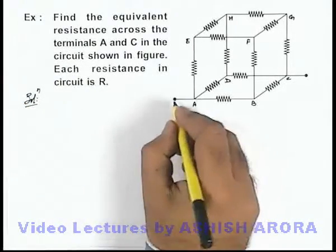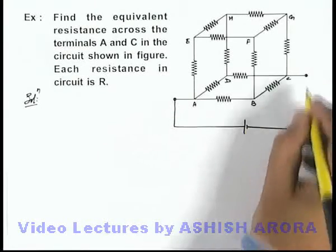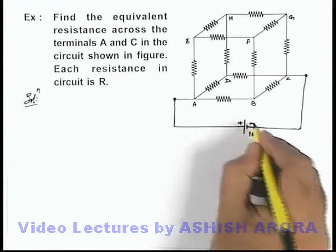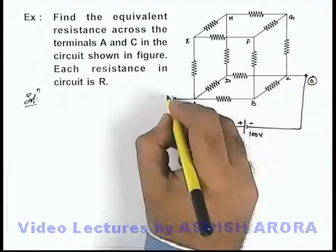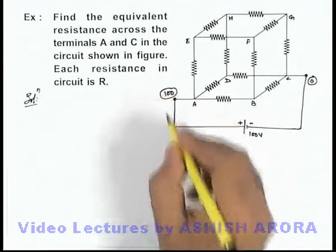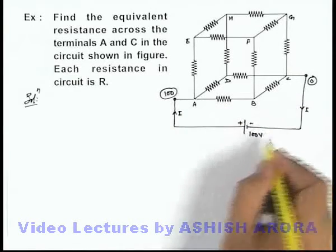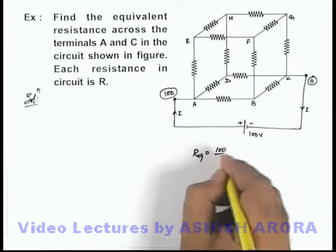Now with the same method here, to calculate the equivalent resistance, let us connect the 100 volt battery across the circuit. If we connect the 100 volt battery, on the negative side it'll be zero potential, on this side it'll be 100 volt. And say if a current i flows through the circuit by the battery, then R equivalent can be written as 100 by i.